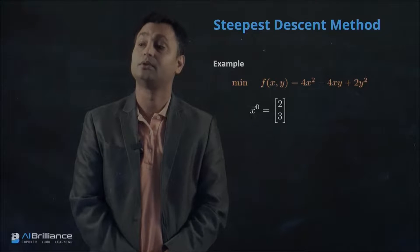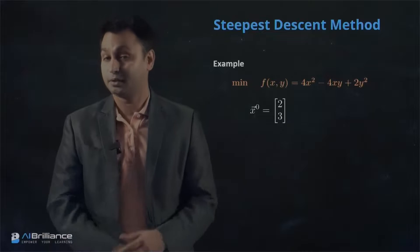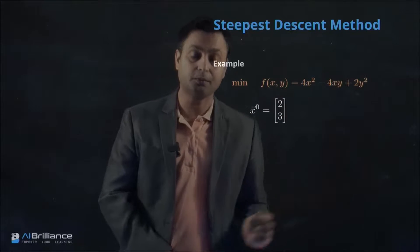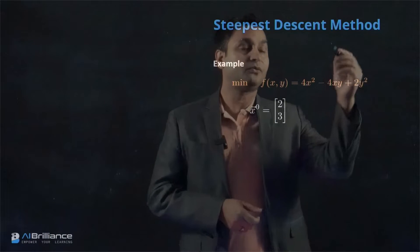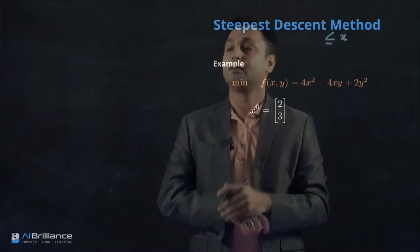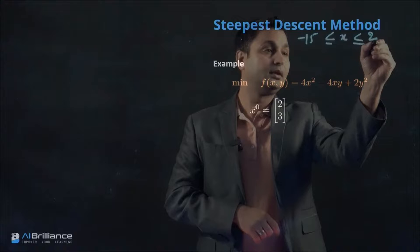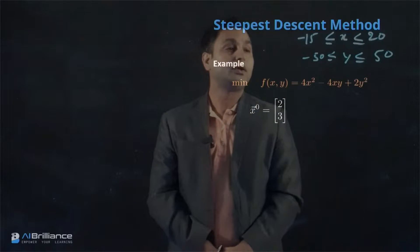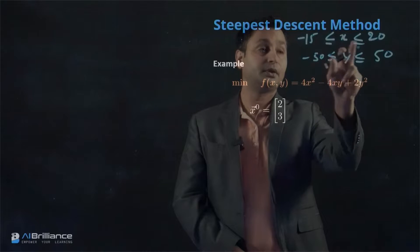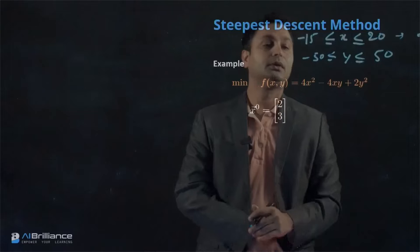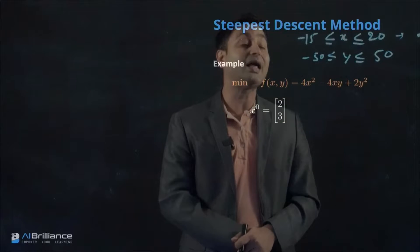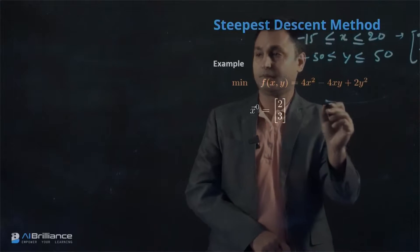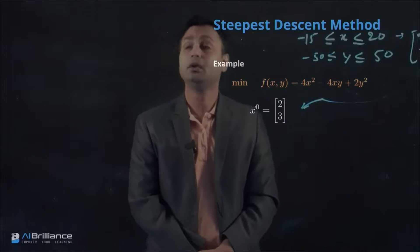Let's say we have a starting iteration x0 given by [2, 3]. As mentioned in the previous class, the first initialization of the vector is essentially randomly generated. If x is bounded between -15 and 20, and y between -50 and 50, we generate random numbers — say x = 2 and y = 3 — and club them together.